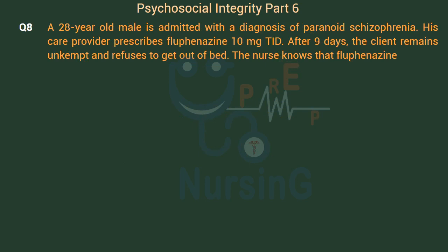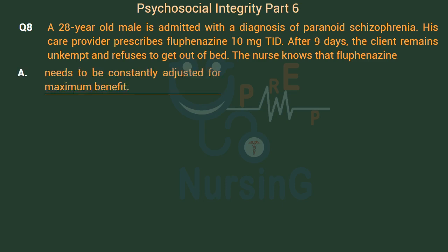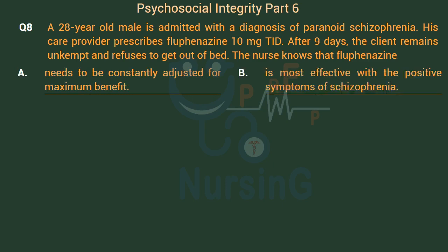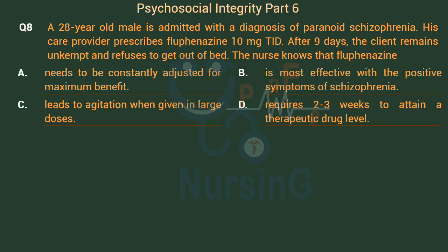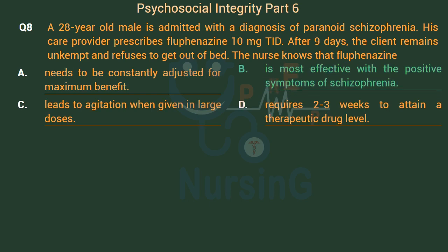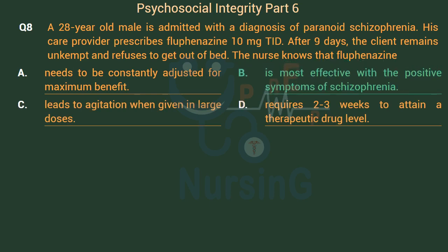A 28-year-old male is admitted with a diagnosis of paranoid schizophrenia. His care provider prescribes fluphenazine 10 mg TID. After 9 days, the client remains unkempt and refuses to get out of bed. The nurse knows that fluphenazine: Option A: Needs to be constantly adjusted for maximum benefit. Option B: Is most effective with the positive symptoms of schizophrenia. Option C: Leads to agitation when given in large doses. Option D: Requires 2-3 weeks to attain a therapeutic drug level. The right answer is Option B — Is most effective with the positive symptoms of schizophrenia.